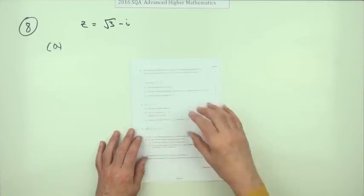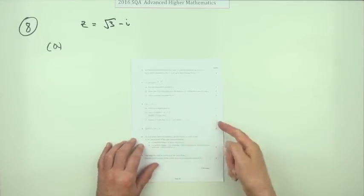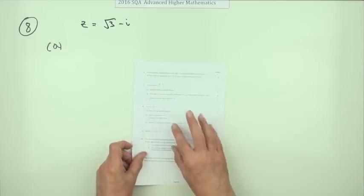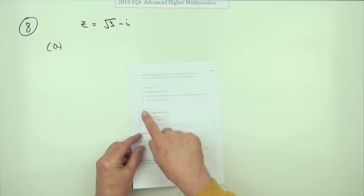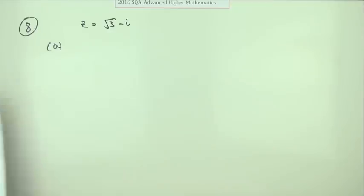So number 8 then from the 2016 Advanced Higher Maths. There we go, complex numbers. Six marks and three little bits. Plotting in Argand diagrams and so on. First part. Here's a complex number in rectangular form. Plot it on an Argand diagram for one mark.